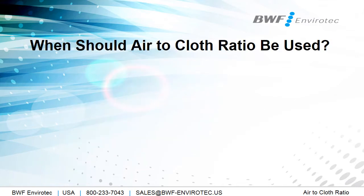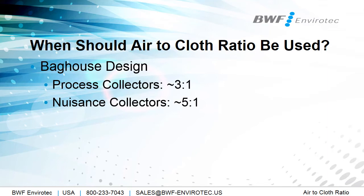When should air-to-cloth ratio be used? It should definitely be used in the baghouse design itself, as it will go into how big or small you might be able to make your baghouse for the situation you have. For instance, some rules of thumb: for large process collectors on combustion systems, milling systems, and drying systems, the air-to-cloth ratio should be approximately 3 to 1. For smaller nuisance collectors on bin vents, transfer points, and smaller systems with a constant speed fan, they can be approximately 5 to 1. Air-to-cloth ratio is also used in troubleshooting as a really good ratio and KPI to be monitored for a system.